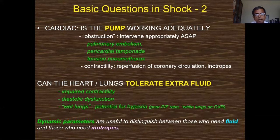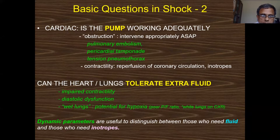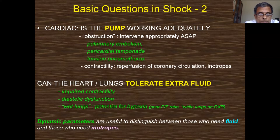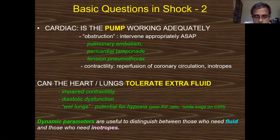Is the pump working adequately? Is there obstruction — pulmonary embolism, pericardial tamponade, or tension pneumothorax? Intervene: drain pericardial tamponade, place intercostal drain for tension pneumothorax, or thrombolyze for pulmonary embolism. If contractility is poor, ask if it is ischemic — if so, urgent reperfusion. Regarding the lungs: if PF ratio is 100 or 50, pushing more fluid worsens oxygenation. Be very careful with fluids in impaired contractility, diastolic dysfunction, or pre-existing lung disease.